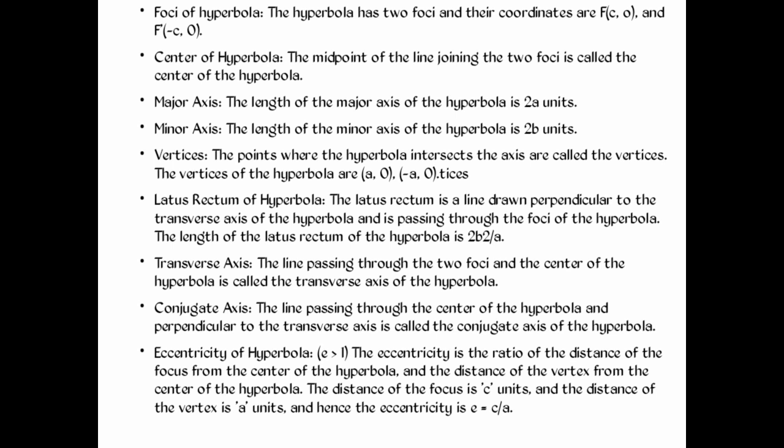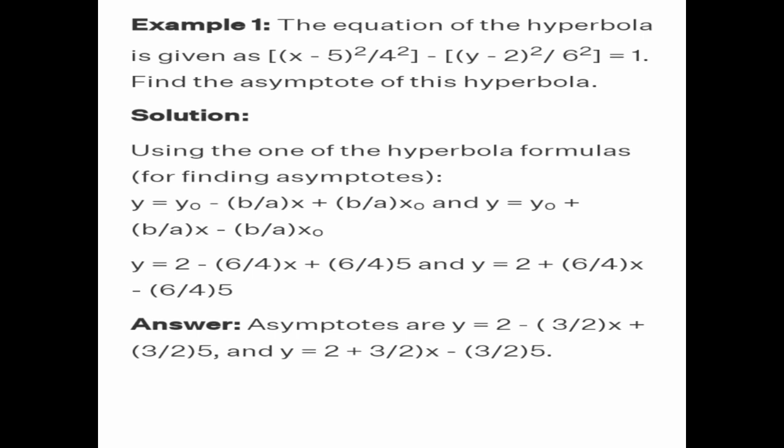The eccentricity is e equals c over a. For example number one, the equation of the hyperbola is given as: (x − 5)² over 4² minus (y − 2)² over 6² equals 1. Find the asymptotes of this hyperbola.